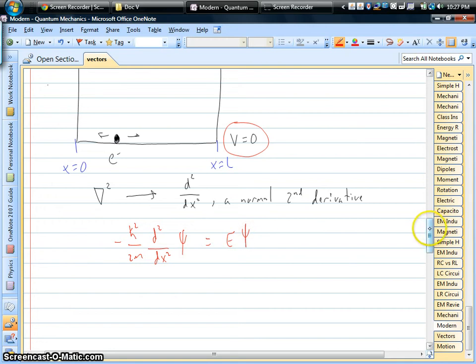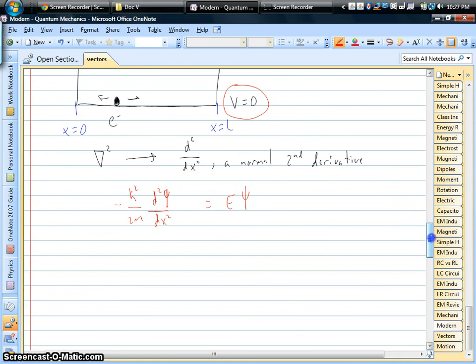We have some constants times the second derivative. There is no V, so this operates on whatever the wave function of this electron is, and that tells us the energy. It's tempting to say don't these wave functions just cancel out? Not quite. The reason is we have this second derivative, it's an operator operating on whatever the wave function is.